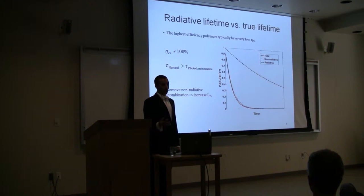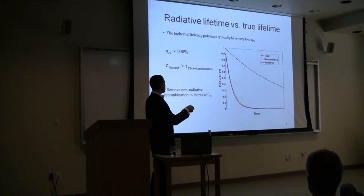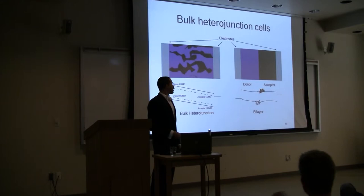Because the exciton diffusion length goes as the square root of the lifetime, we can see that if somehow we could turn off this non-radiative process, increasing the lifetime to the natural lifetime of the exciton, we'd be able to increase the diffusion length of the exciton. And that will be important for these solar cells.